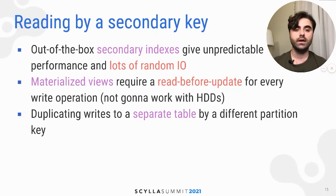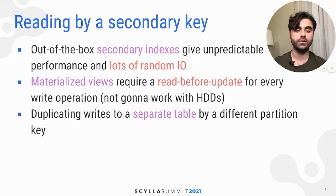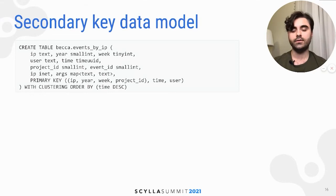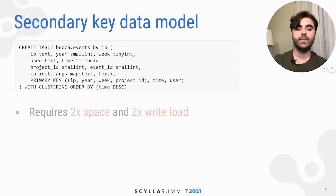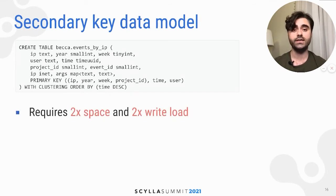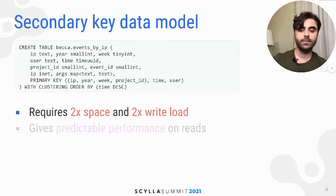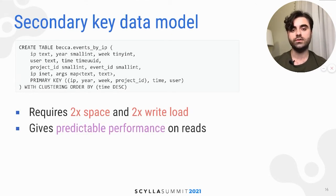So we decided to go another way. We created a separate table with a different partition key and started duplicating writes to that table from our application. Basically we substituted the user field in the primary key with the IP field. This approach requires twice the space, which is acceptable since we use HDDs and those are cheap, and twice the write load, which is also acceptable because writes are mostly sequential in Scylla and that works fine with HDDs. This approach gives us predictable performance on reads.